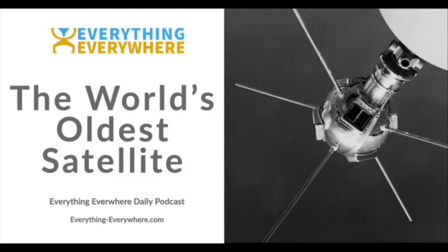Vanguard 1 wasn't much of a spacecraft. It was small enough to fit in the palm of your hand. Nikita Khrushchev mockingly called it a grapefruit satellite, and he kind of had a point. It was about the size of a grapefruit. It was a sphere encased in aluminum, and it weighed only 3.2 pounds, or 1.47 kilogram.